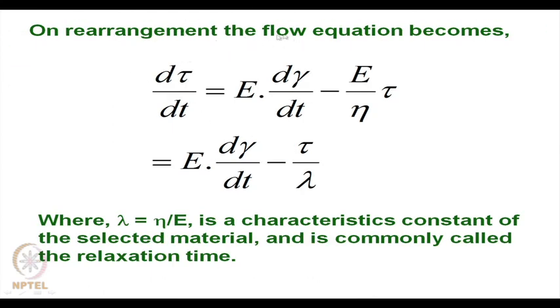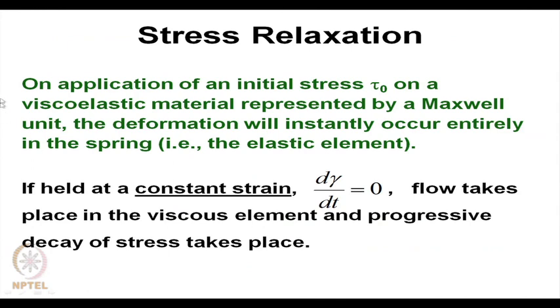On rearrangement, the flow equation becomes: d(tau)/dt = E × d(gamma)/dt − (E/eta) × tau = E × d(gamma)/dt − tau/lambda. Here lambda = eta/E is a characteristic constant of the material known as the relaxation time. Some minimum time should be allowed after a load is released for the segment to relax and come back to its original configuration — this is known as stress relaxation.